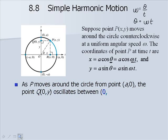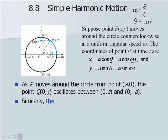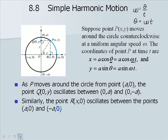As P moves around the circle from point A0, the point Q at 0y oscillates between 0a and 0 negative a, or basically oscillates in the circle along the y-axis. Similarly, the point R at x0 oscillates between the points A0 and negative A0, or within the circle along the x-axis.